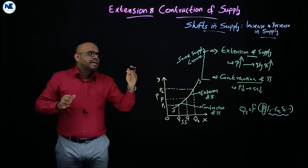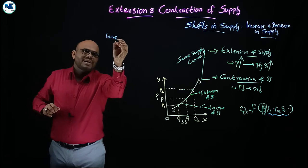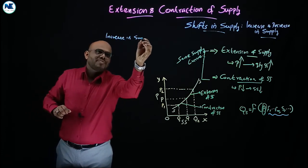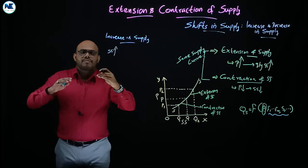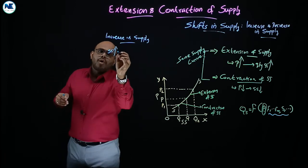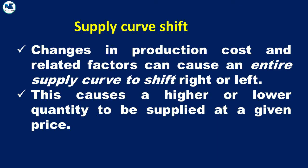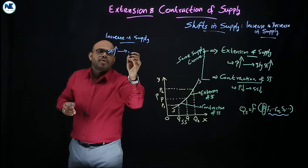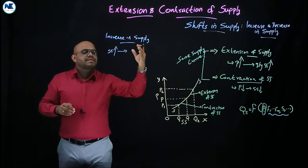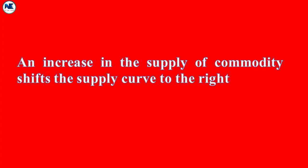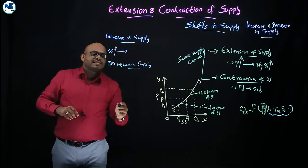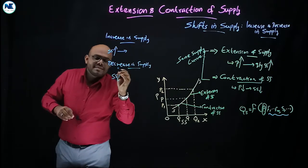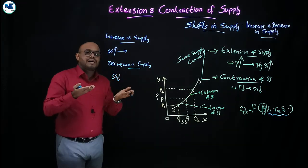Increase in supply means that the quantity supplied — the volume of supply — is increasing on account of factors except price. Supply is increasing on account of changes in factors that determine supply other than price. Decrease in supply means supply is decreasing on account of changes other than the price of the commodity.